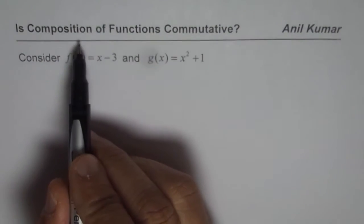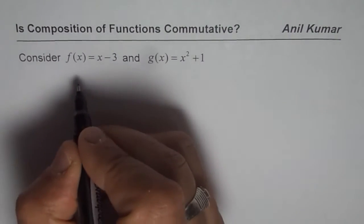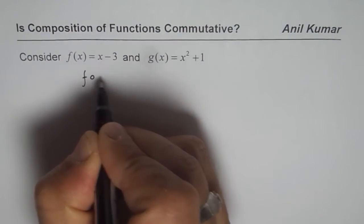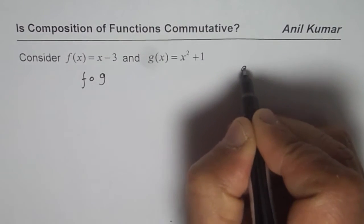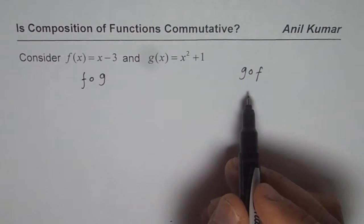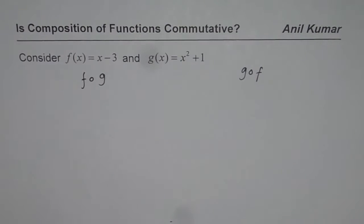When we say is composition of functions commutative, what are we trying to prove? We are trying to prove that f of g and g of f, if they are exactly the same, then it is commutative. If they are not the same, then it is not commutative.